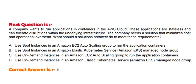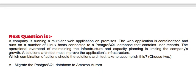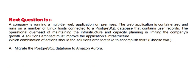Option C: Use On-Demand Instances in an Amazon EC2 Auto Scaling group to run the application containers. Option D: Use On-Demand Instances in an Amazon Elastic Kubernetes Service managed node group. The correct answer is Option B.